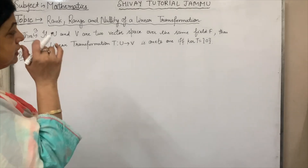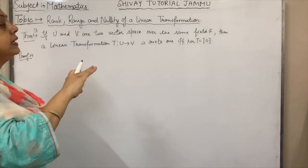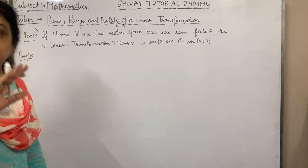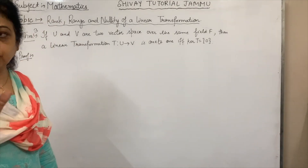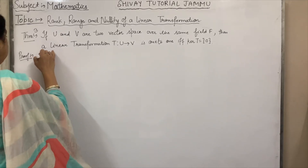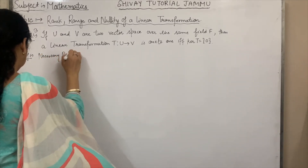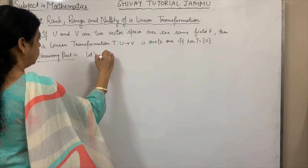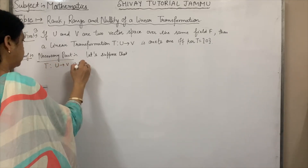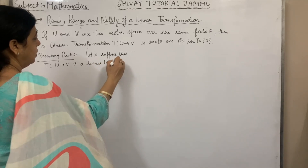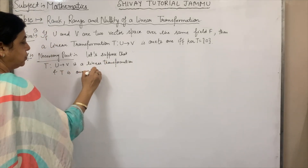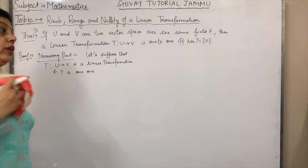If U and V are two vector spaces over the same field F, then a linear transformation T from U to V is one-to-one if and only if kernel of T has only one element. If only zero goes to zero dash and no other element goes to zero dash, then T is one-to-one. We have to prove two parts. Suppose T from U to V is a linear transformation and T is one-to-one; we prove that kernel of T has only zero.